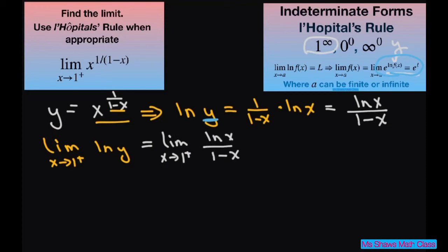We're going to apply L'Hôpital's rule and take the derivative of both the numerator and the denominator. For the numerator, you're going to get 1 divided by x, and for the denominator, this is just going to be negative 1. Go ahead and apply the limit, and when you plug in 1, you're going to get this equals negative 1.